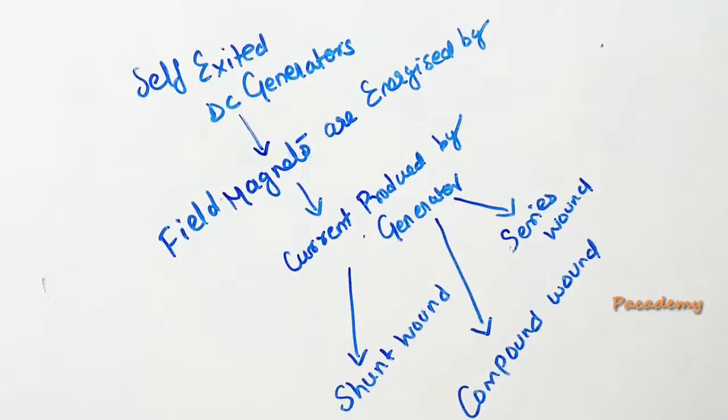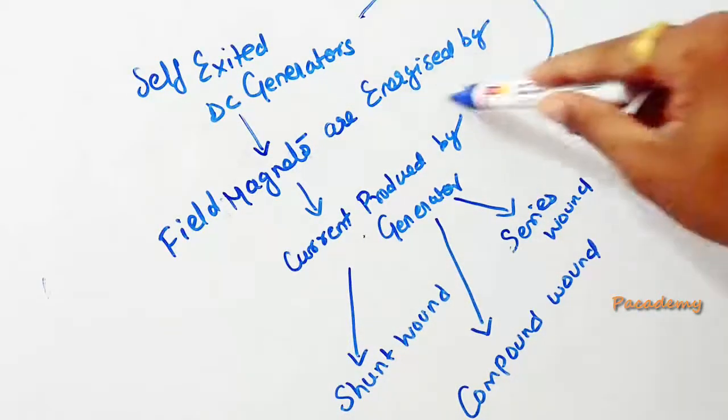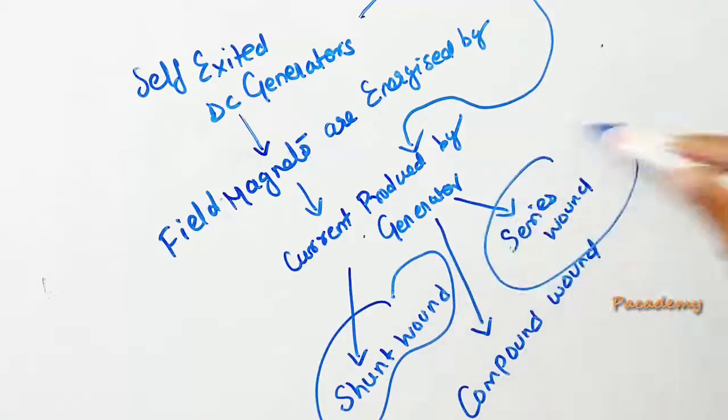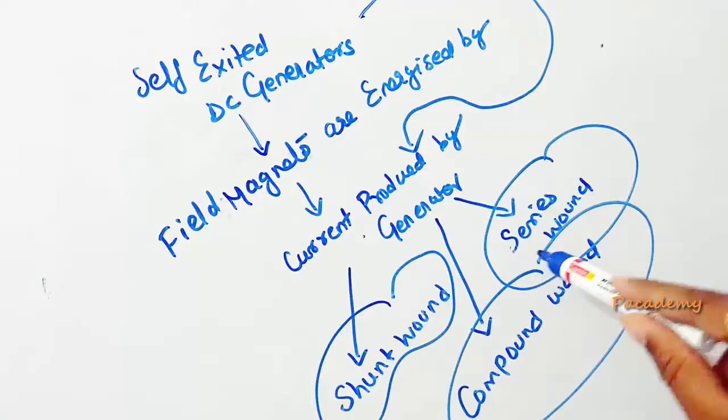Self-excited DC generators are those whose field magnets are energized by the current produced by the generator itself. The self-excited generator is classified into shunt wound, series wound, and compound wound generators.